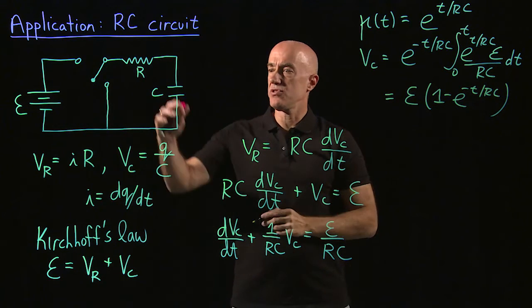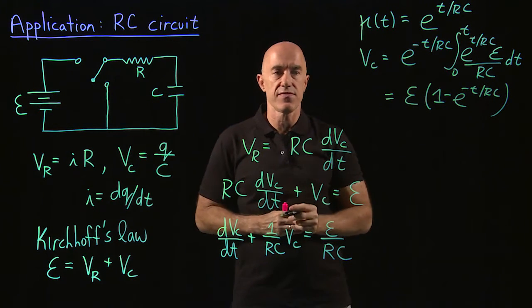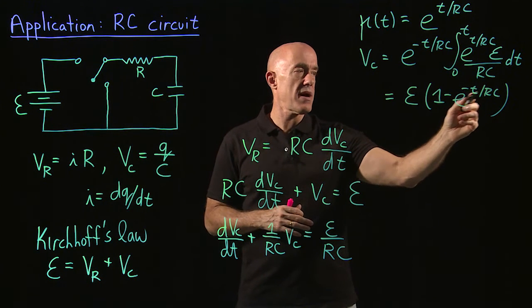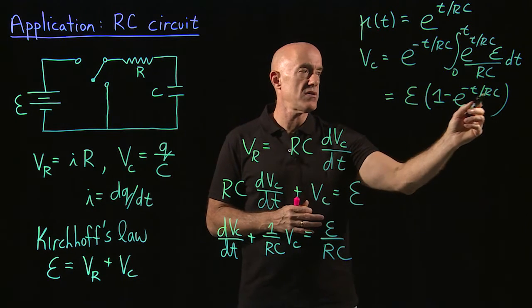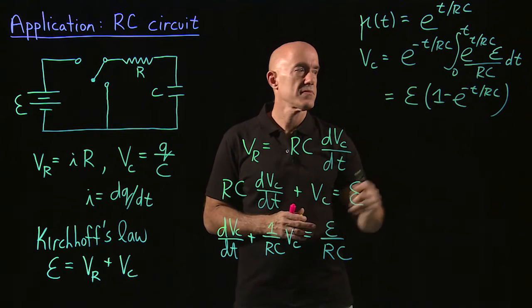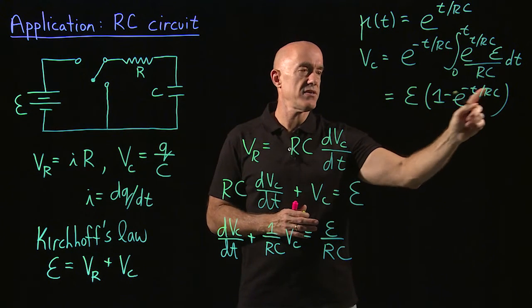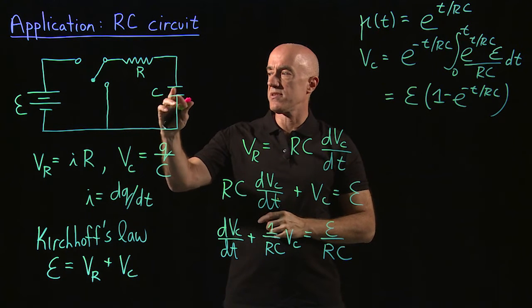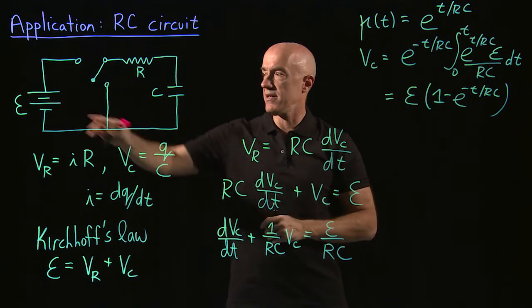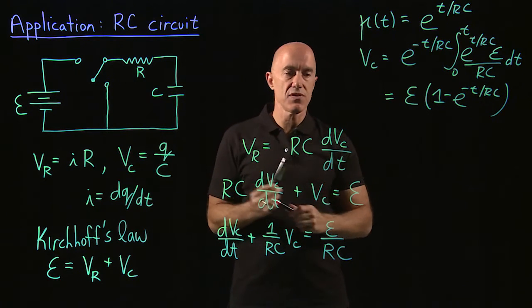The voltage across the capacitor at t = 0 is 0, as confirmed by the expression: 1 minus 1 is 0. Eventually, e^(−t/RC) decays to 0. The timescale of the RC circuit is RC, since we have −t/RC in the exponential. So the voltage across the capacitor grows until it equals the applied voltage — the EMF of the circuit. That's what happens when we charge up.